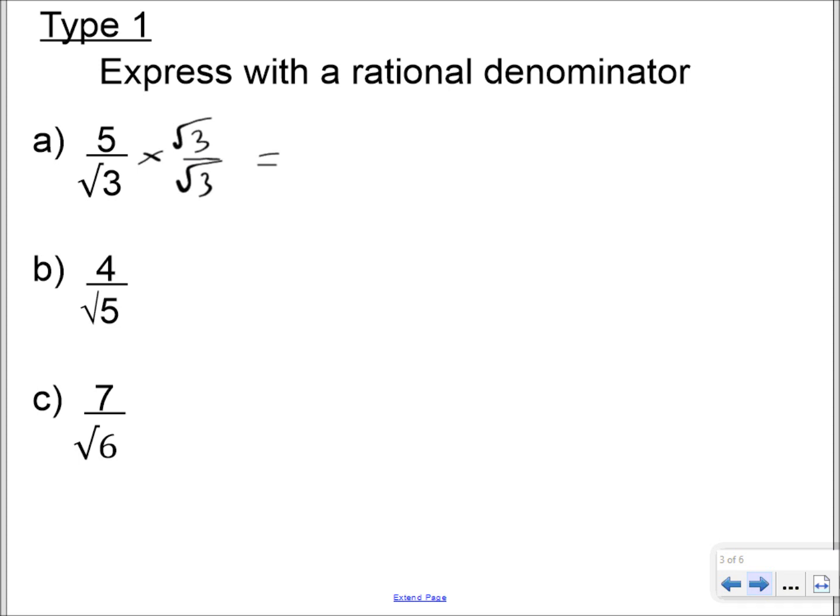So, when you multiply 5 over root 3 by root 3 over root 3, you end up with a numerator of 5 root 3 over root 3 times root 3 is 3, the square root of 9, which is 3. And that's you done. That's all you have to do.